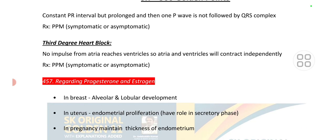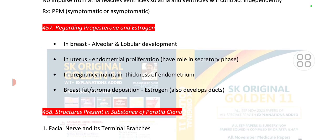Third degree heart block: no impulse from the atria reaches the ventricle, so atria and ventricles contract independently. Point number 457: progesterone and estrogen cause alveolar and lobular development in the breast. In the uterus, endometrial proliferation is by progesterone and estrogen. In pregnancy, they maintain thickness of the endometrium. Breast fat deposition is mainly by estrogen.